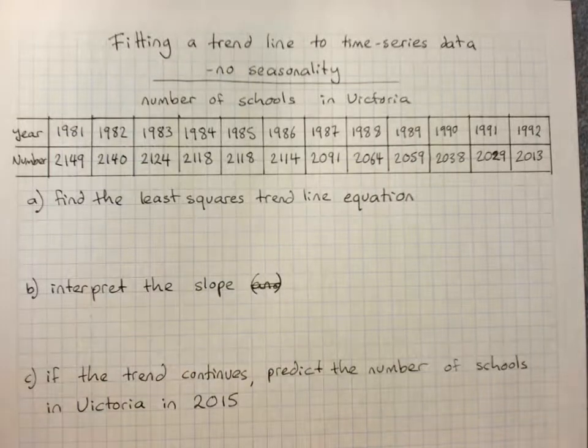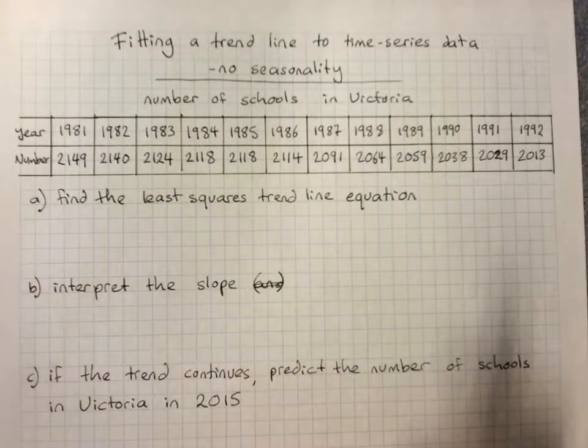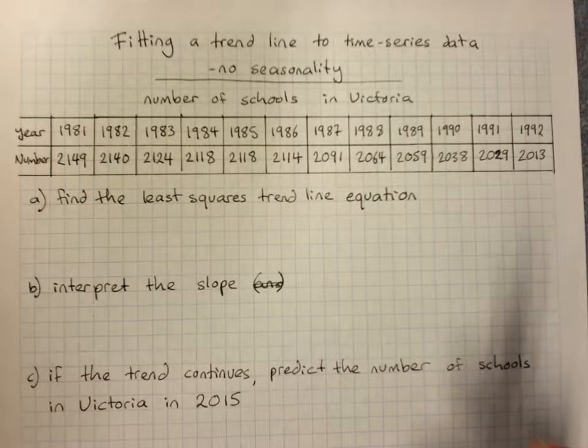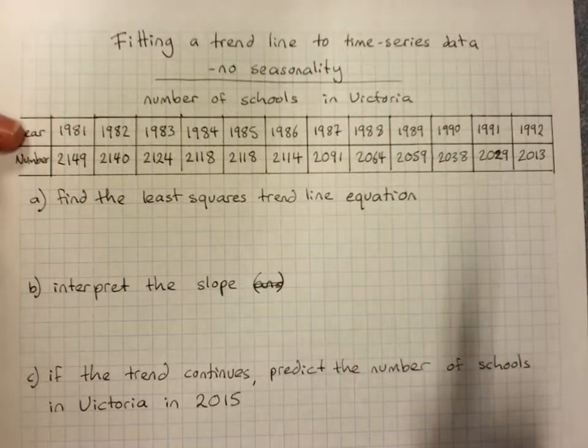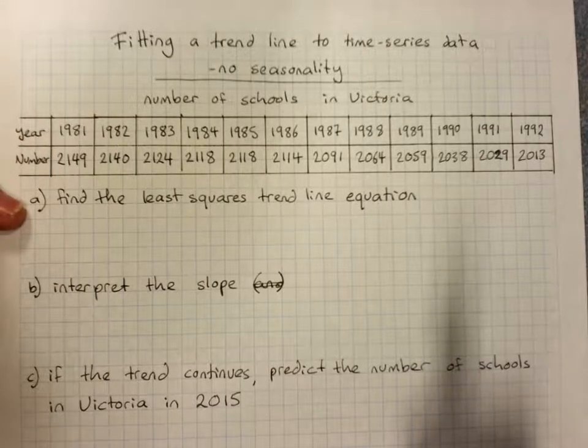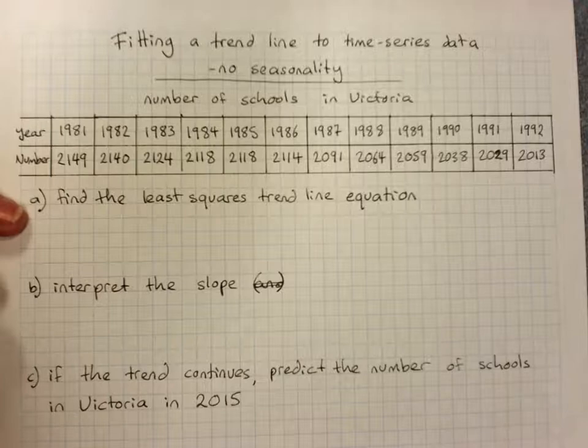Time series data fitting a trend line. We are starting with no seasonality in our data. So we've got a table of the number of schools in Victoria and they've asked us to find the least squares trend line equation.